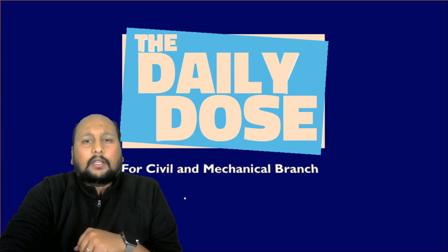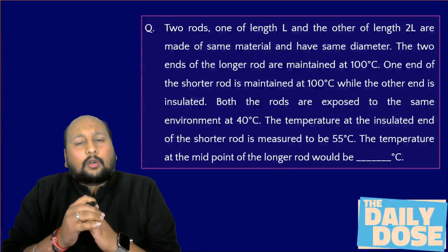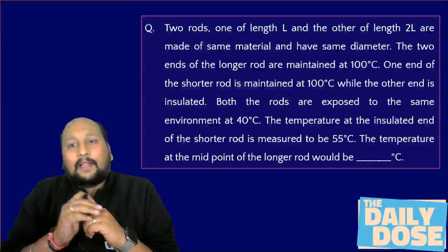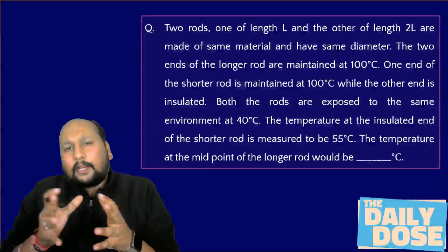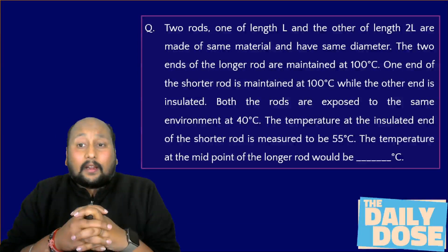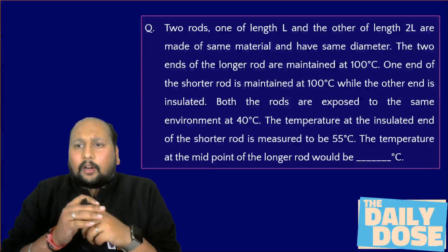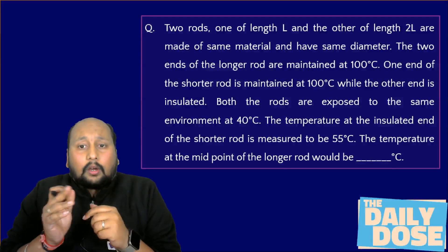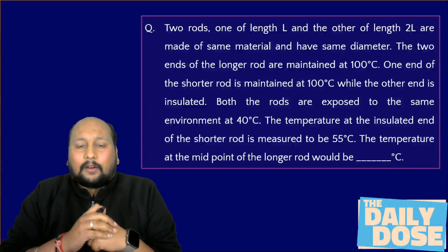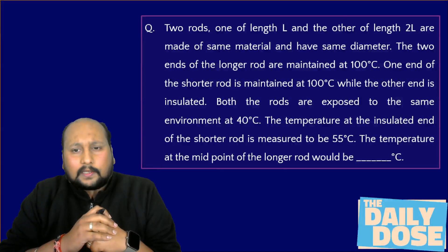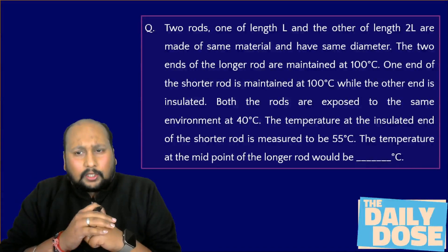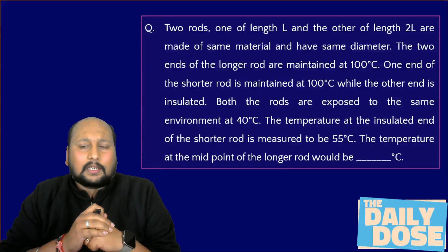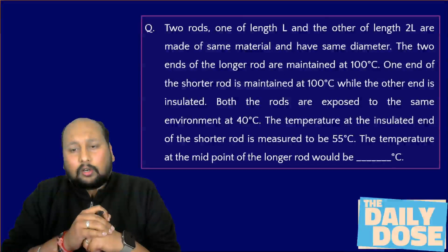In this question, there are two rods — one of length L and another of length 2L — made of the same material and same diameter. The two ends of the longer rod are maintained at 100°C. One end of the shorter rod is at 100°C while the other end is insulated. Both rods are exposed to the same environment at 40°C. The temperature at the insulated end of the shorter rod is measured to be 55°C.